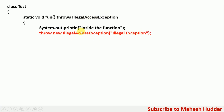What I am doing here is explicitly throwing an exception called IllegalAccessException. Because this method 'fun' is going to throw IllegalAccessException, we have to have a try-catch block wherever we call this particular method in the Java program.